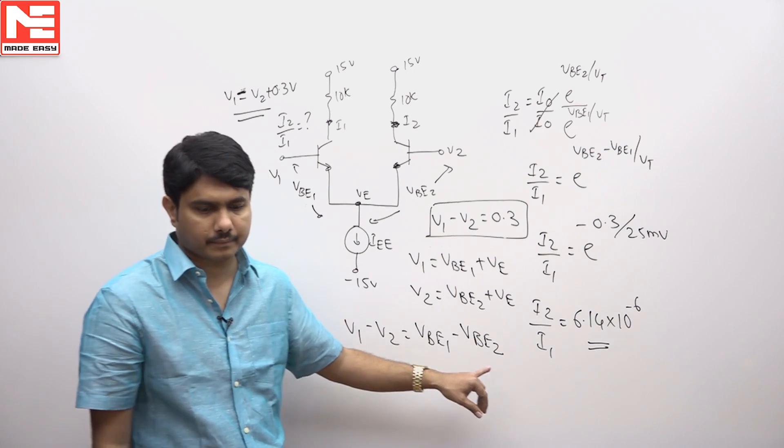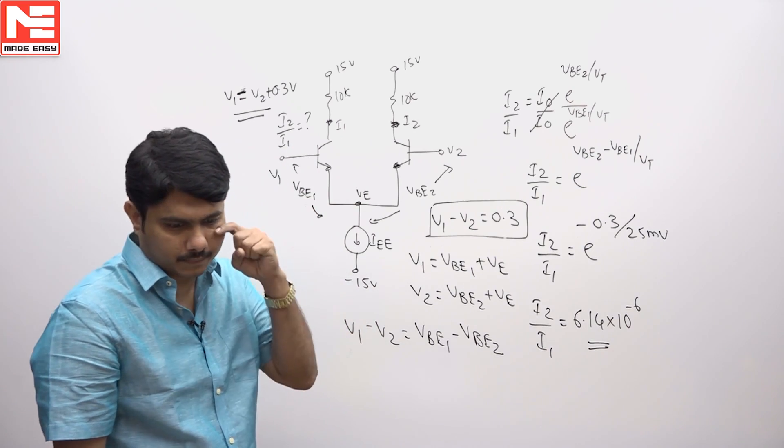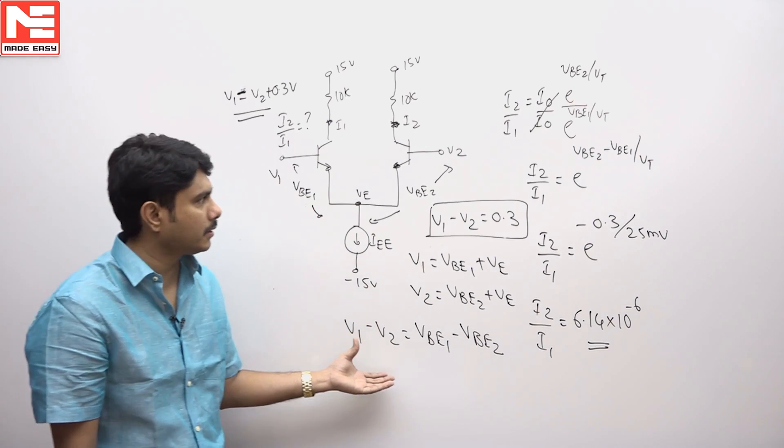This must be the correct answer, 6.14 into 10 power minus 6. So this is the design values. So this is the issue of theory. We'll see you next time.